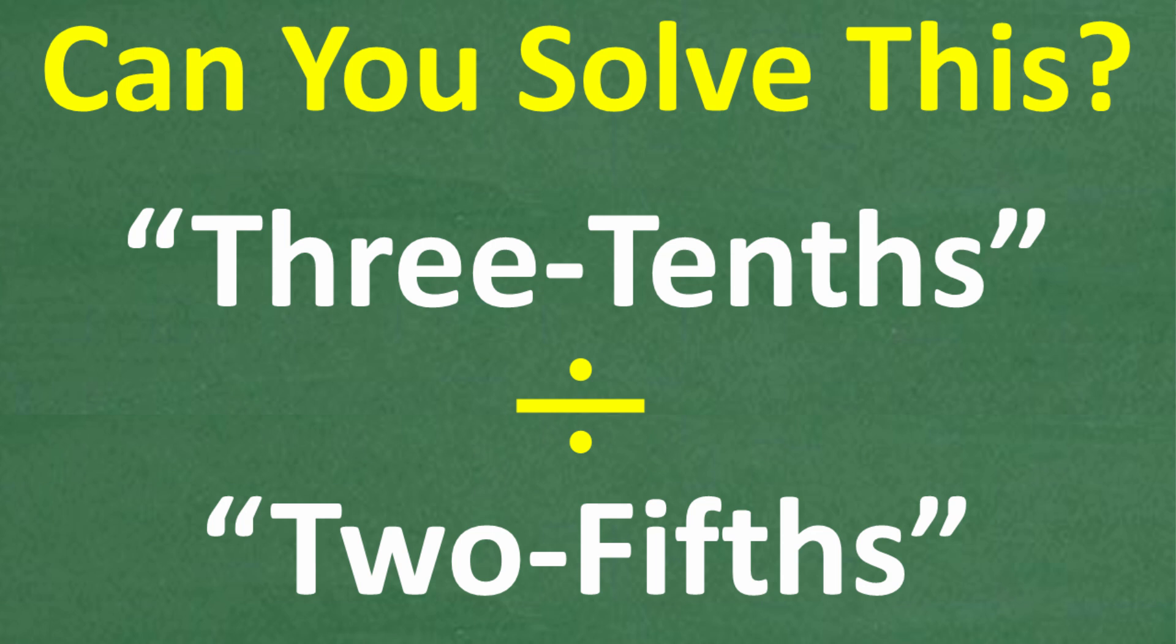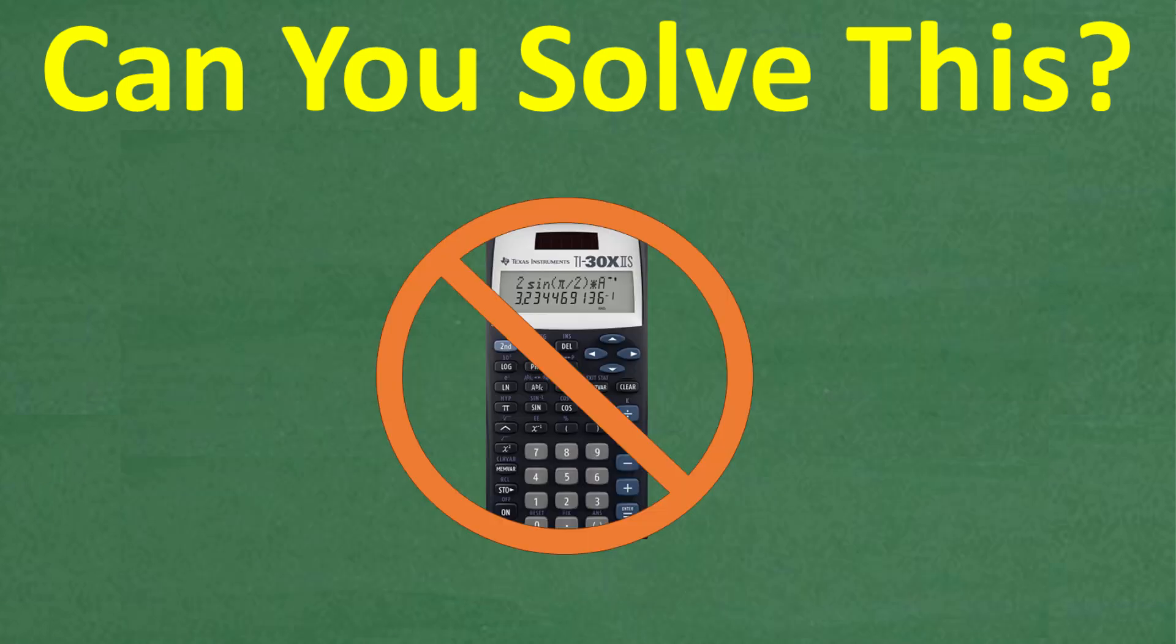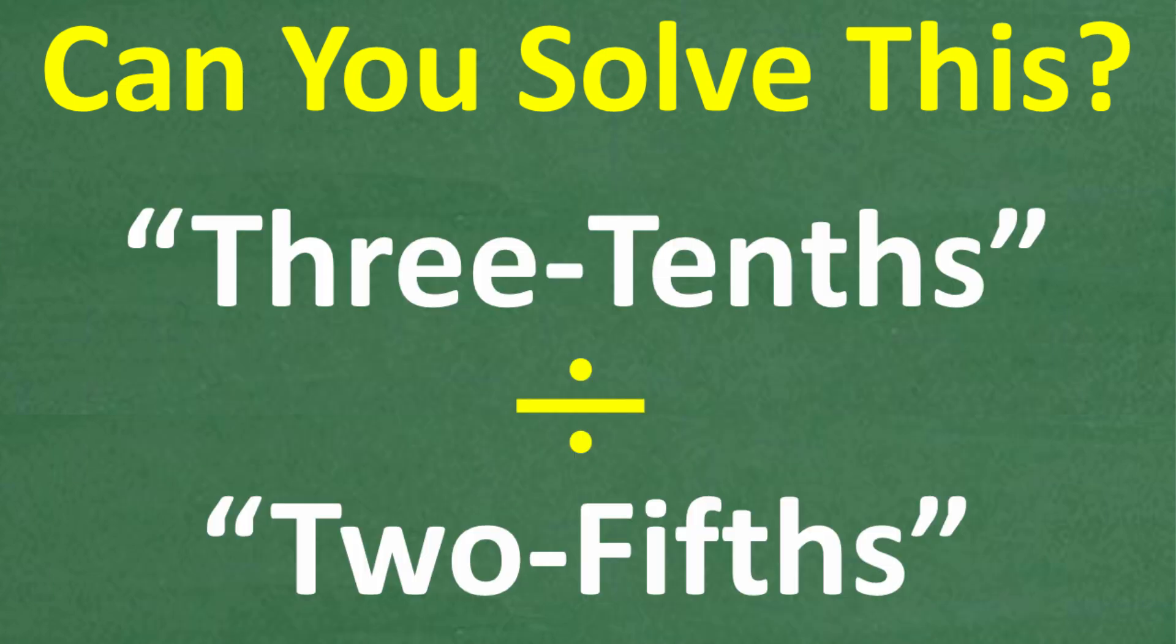Let me go ahead and read this to you. It says three-tenths divided by two-fifths. So what is the best way to answer this question? And let's throw in an additional thing. We're going to put our calculators away.